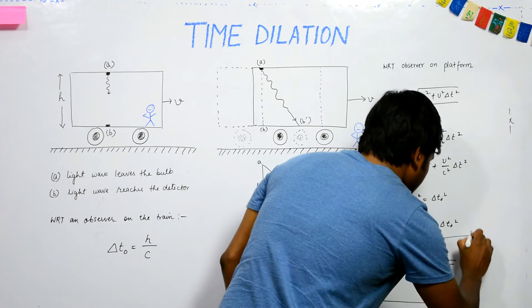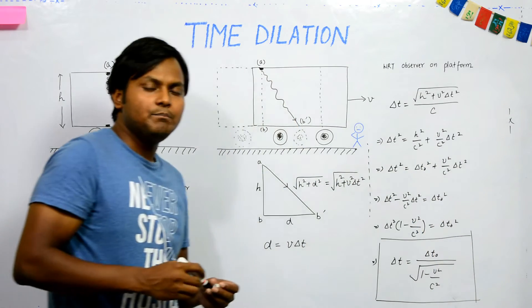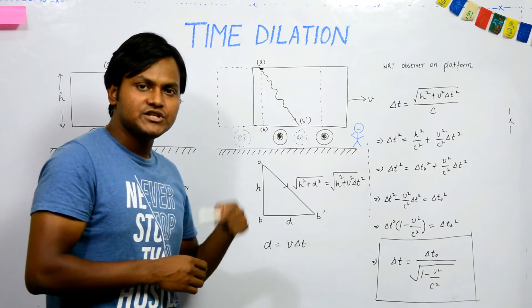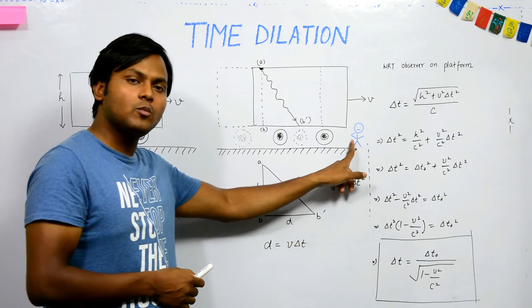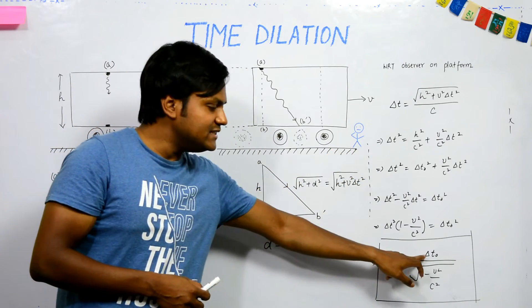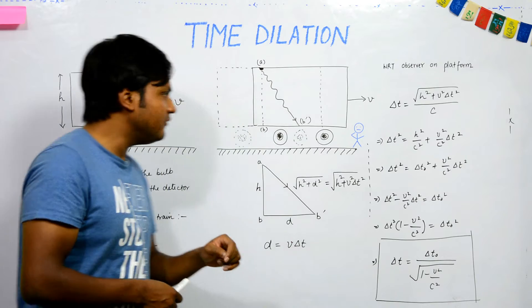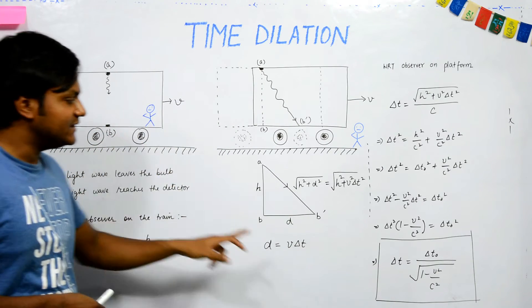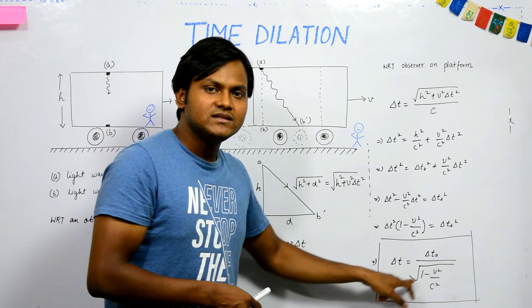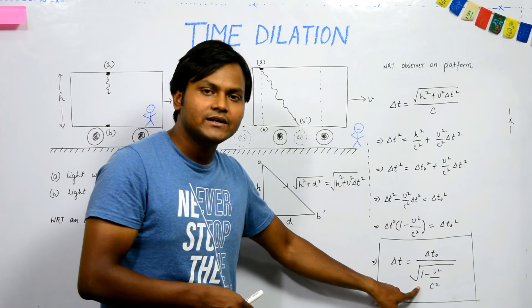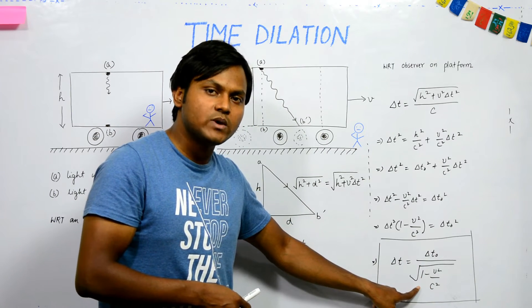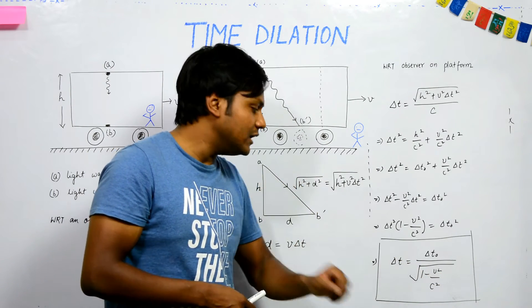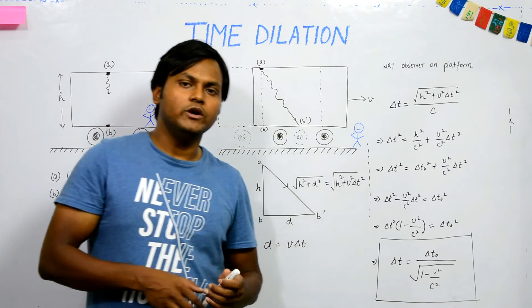Here, ΔT is the time period between the two physical events measured by the platform observer, and ΔT₀ is the time period between the same two events measured by the observer inside the train. They are not the same because of the factor √(1 − v²/C²). Since v is not exactly zero, this term has some value, and therefore the two time periods differ.